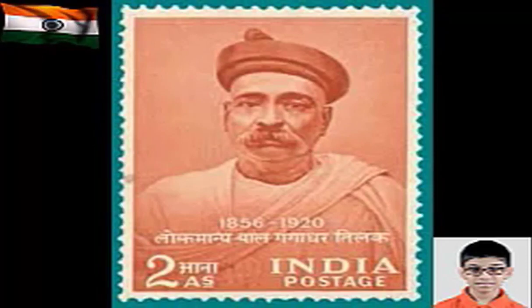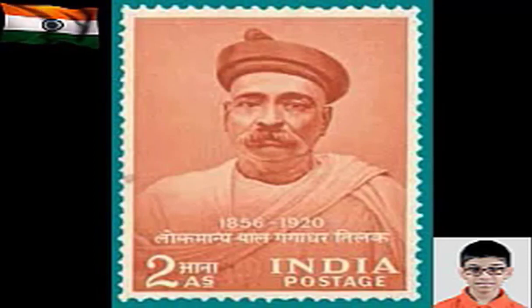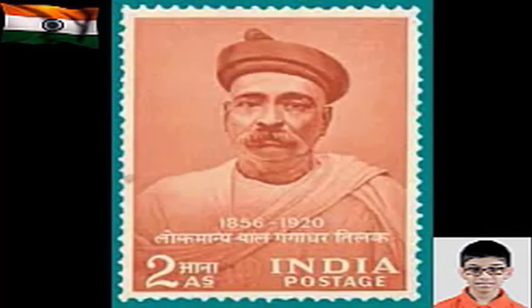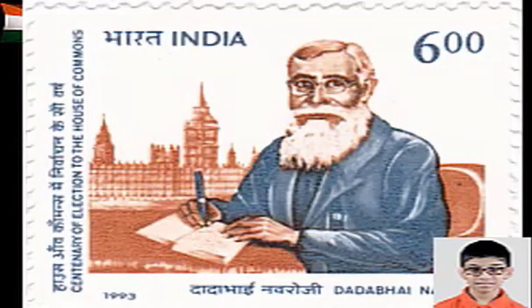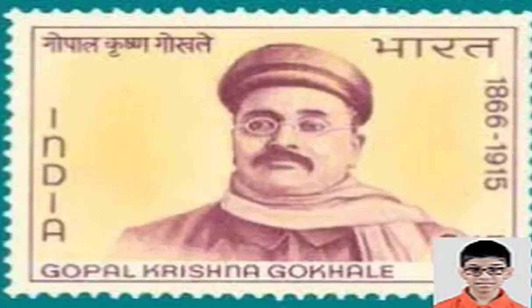Bal Gangadhar Tilak was the first Indian nationalist to embrace Swaraj as the destiny of the nation. Tilak deeply opposed the British education system and resented the denial of freedom of expression for nationalists. His famous sentence, 'Swaraj is my birthright and I shall have it,' became a source of inspiration for Indians. In 1907, Congress was split into two factions. The radicals, led by Tilak, advocated civil agitation and direct revolution to overthrow the British Empire. The moderates, led by Dadabhai Naoroji and Gopal Krishna Gokhale, wanted reforms within the framework of British rule.